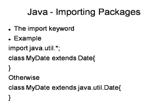To use packages there is the 'import' keyword — that is why we always say 'importing packages'. The example is: 'import' followed by the particular package name. We can use star notation like 'java.util.*' to import everything, or we can write the full class path if we want to use it without importing the package.